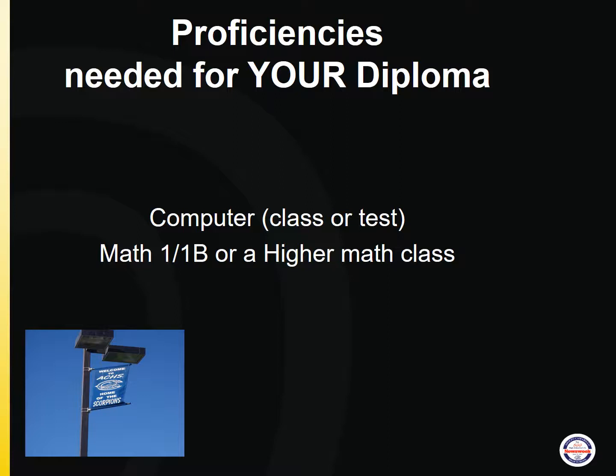In addition to the 230 credits required for the diploma, there are also two proficiencies needed. The first is the computer proficiency. You can fulfill this requirement by taking a specific class that fulfills the computer literacy requirement or taking a test, which is offered multiple times throughout the school year. The other proficiency is the math proficiency. You must pass through Math 1 second semester or a Math 1B or higher math class.